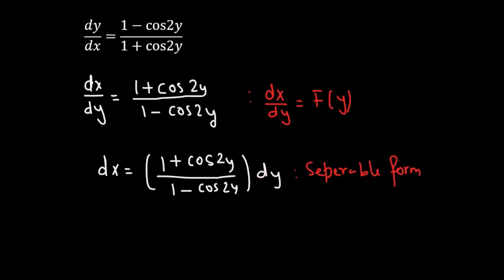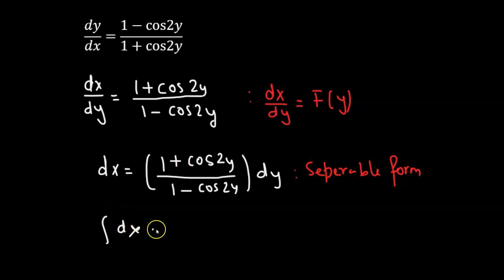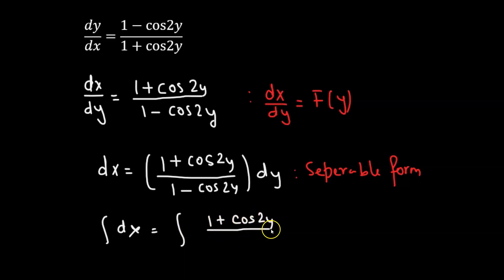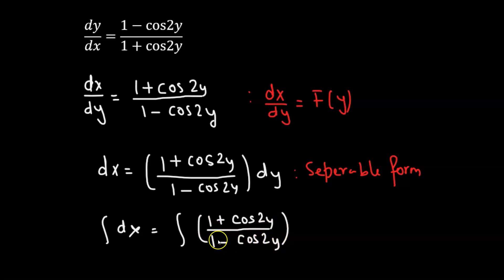So let's integrate both sides. We have the integral of dx equals to the integral of 1 plus cosine of 2y divided by 1 minus cosine of 2y, integrated with respect to y.